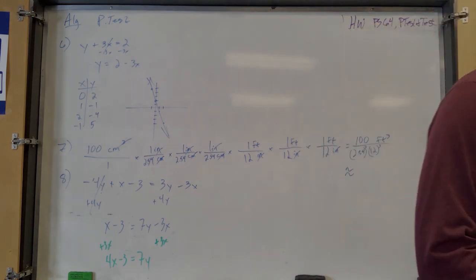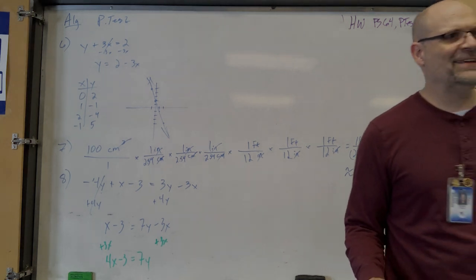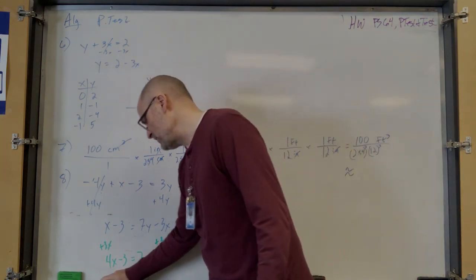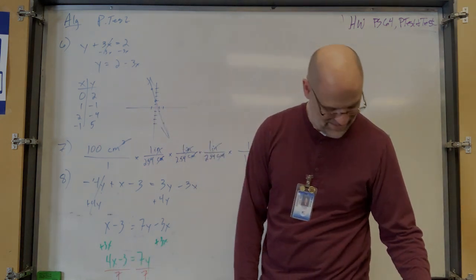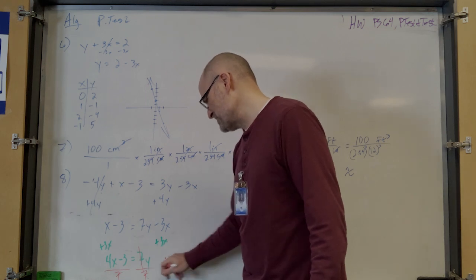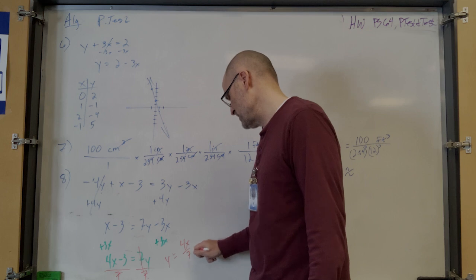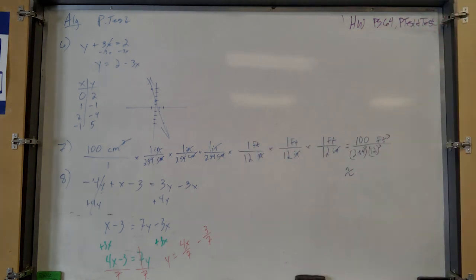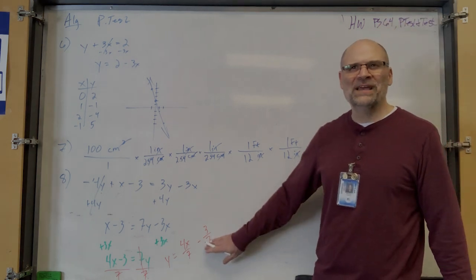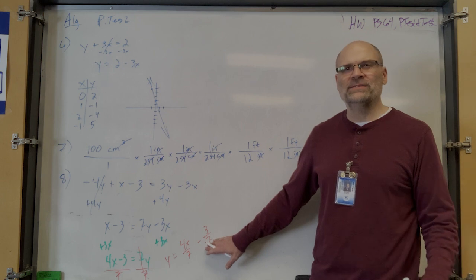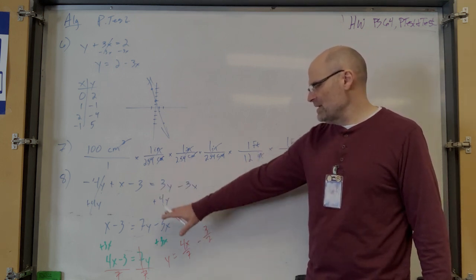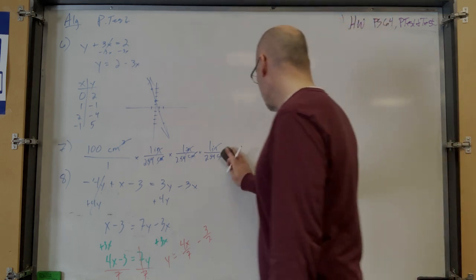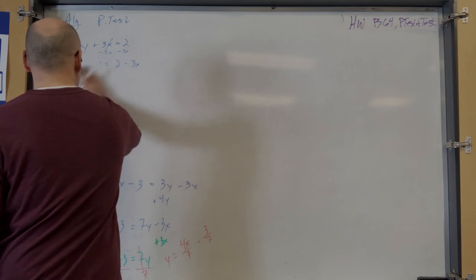Get rid of minus 3x by adding 3x to both sides. There's already an x on the left, so this becomes 4x minus 3 equals 7y. Now divide both sides by 7 to isolate y. You get y equals 4x over 7 minus 3 over 7. That's all you have to do — you're done.